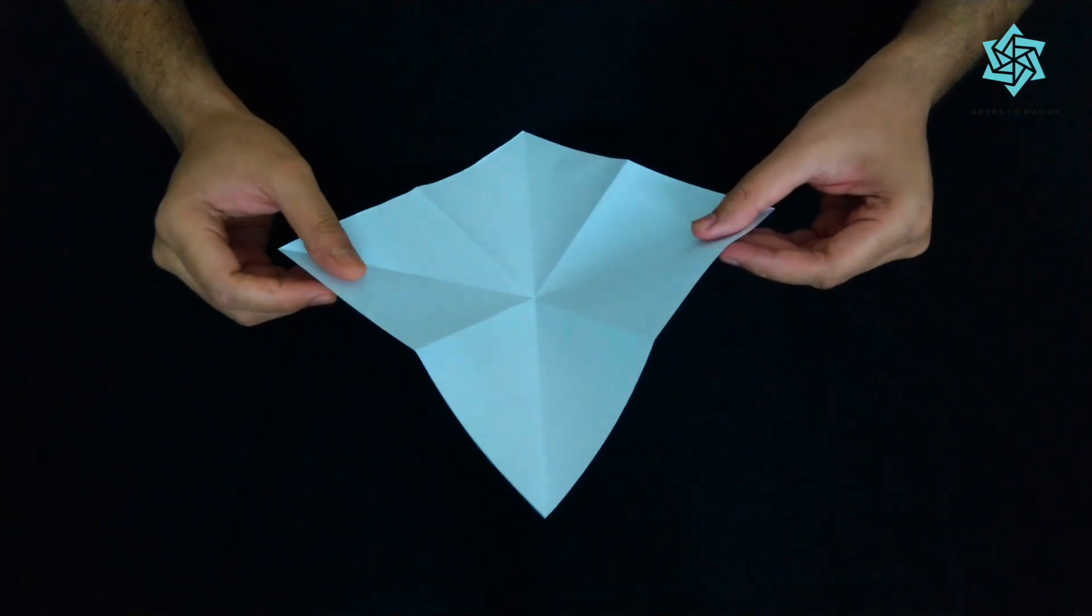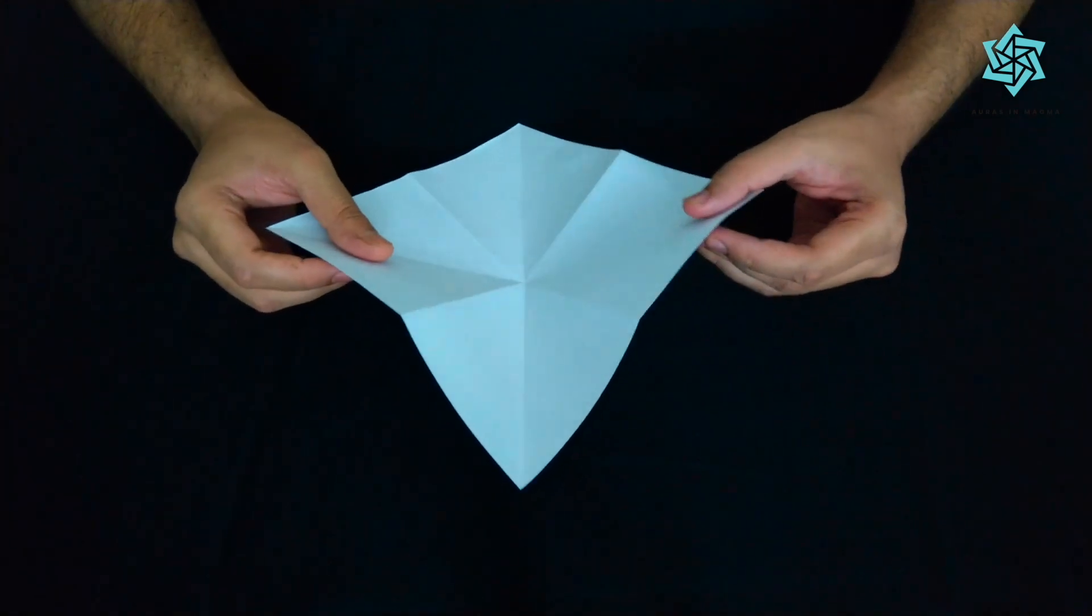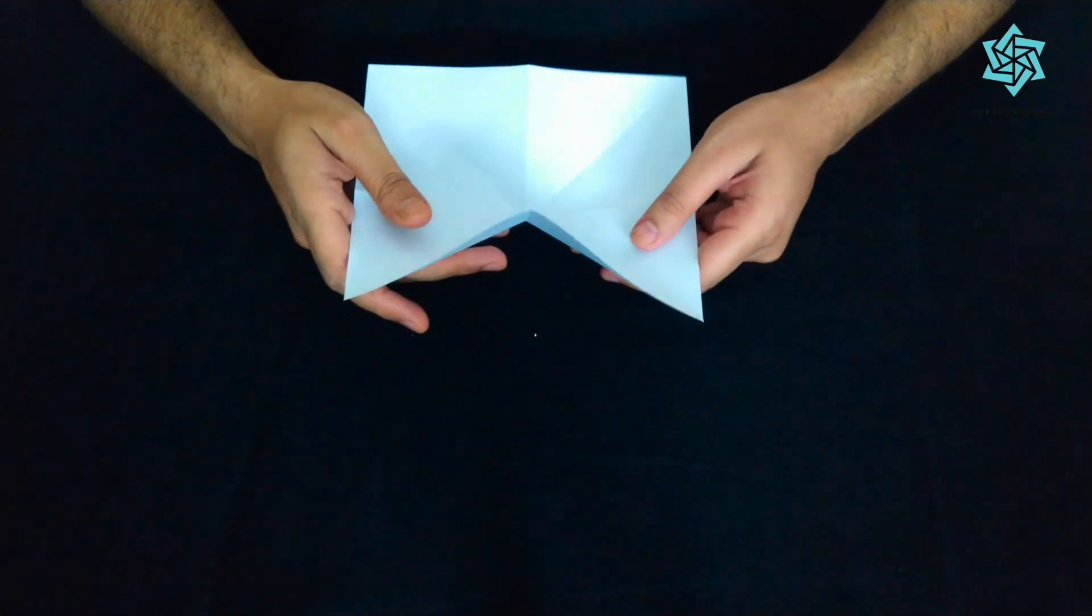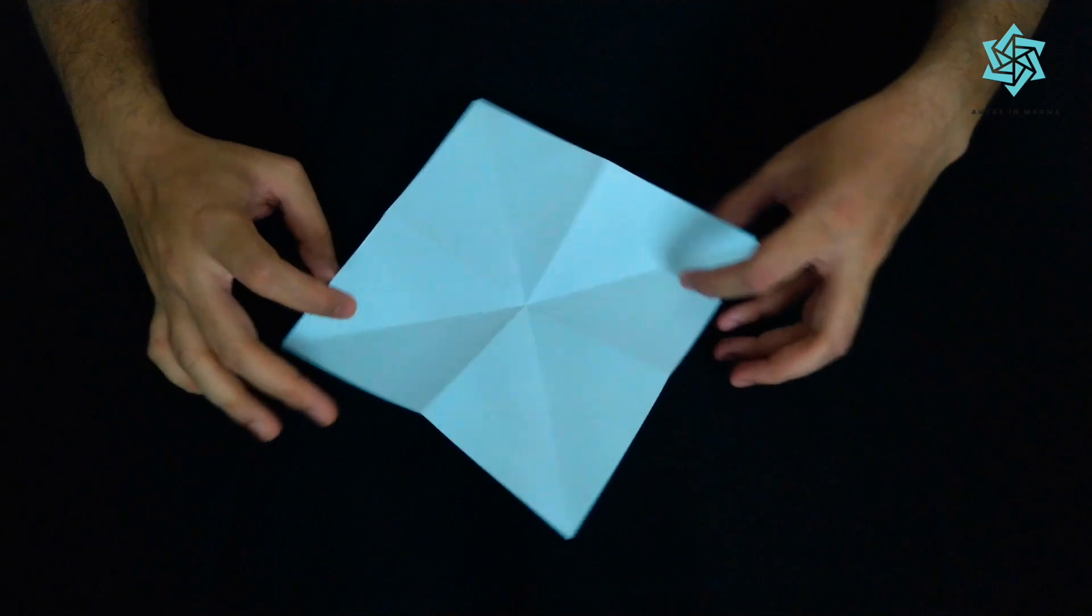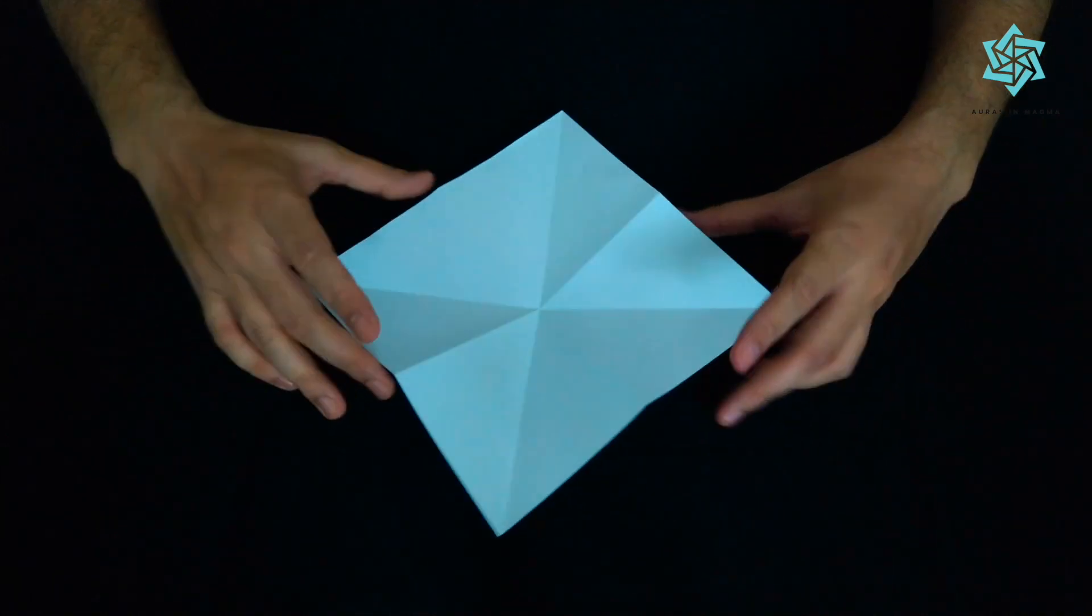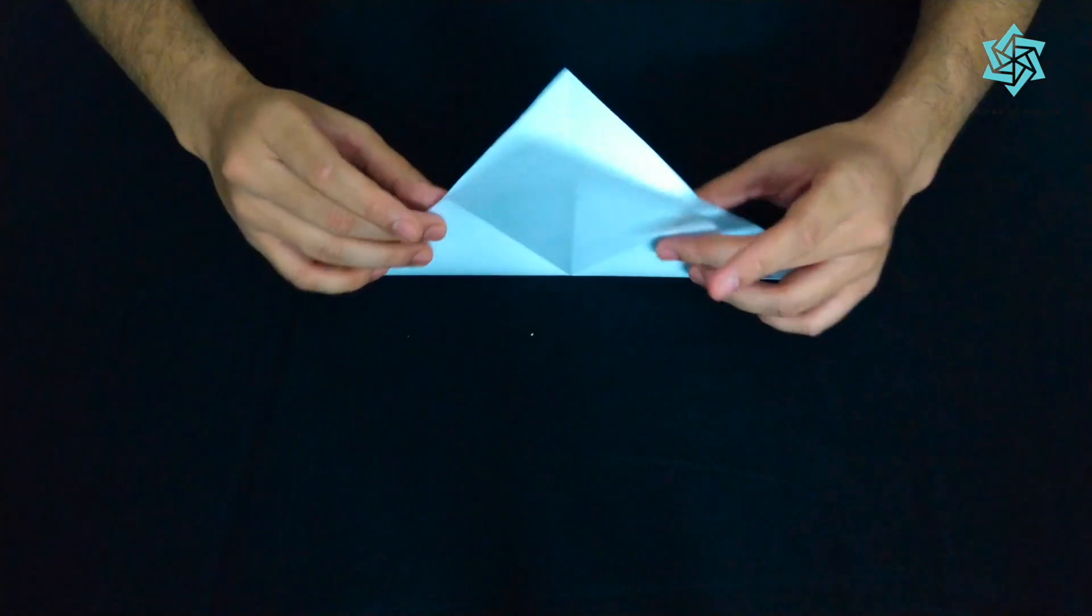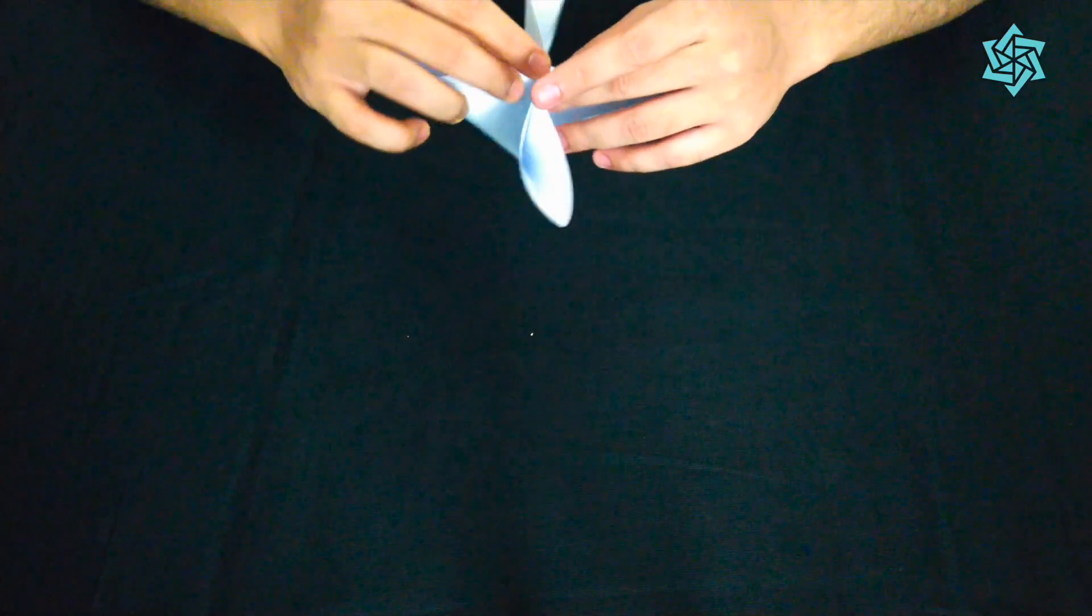So the cross over here is coming out in a valley and the plus is coming out in a mountain. So with this it is very simple to assemble this into a water bomb. We just have to pinch these two together and there we go.